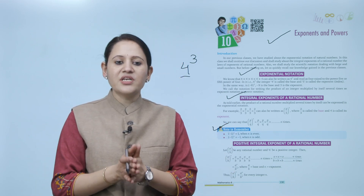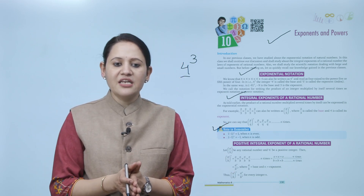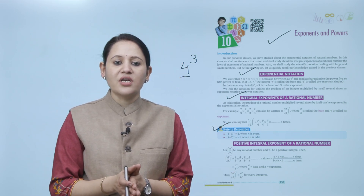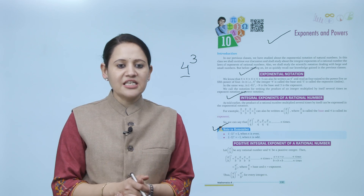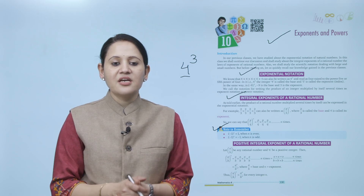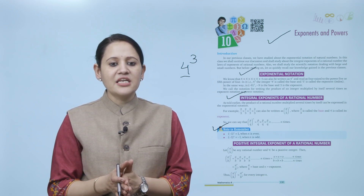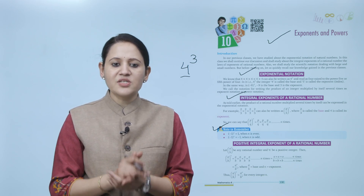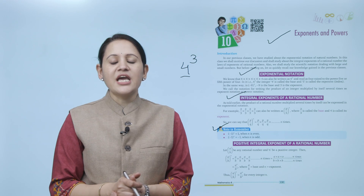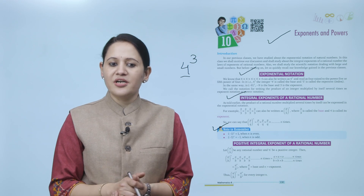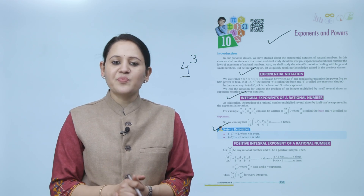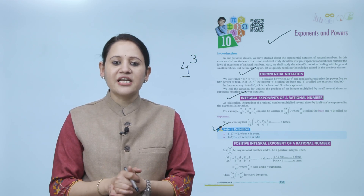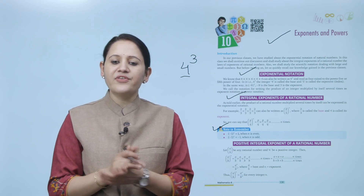Note to remember: (-1) to the power n equals 1 when n is an even number, and (-1) to the power n equals -1 when n is an odd number.